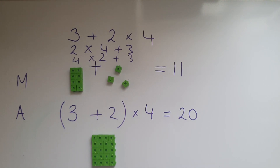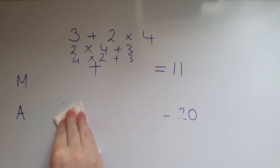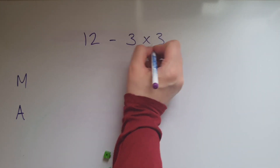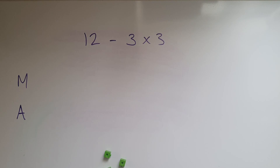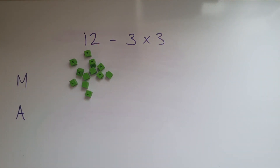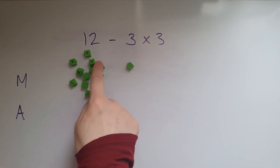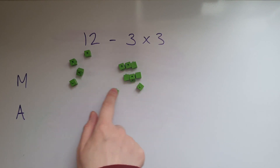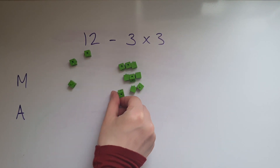But does multiplication come before subtraction as well? Let's have a look. We have 12 take away 3 times 3. Do we do 12 take away 3 first, or do we do 3 times 3 first? Let's represent it visually. Here we have 12 cubes, and we're going to take away 3 lots of 3.